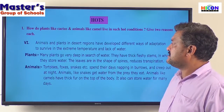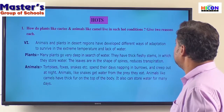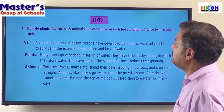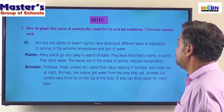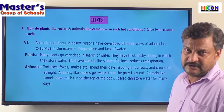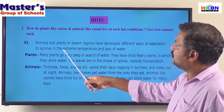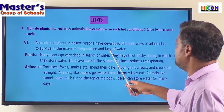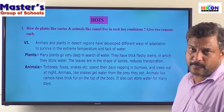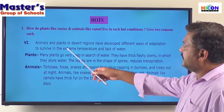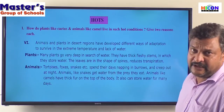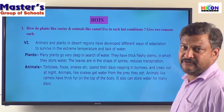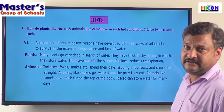Animals and plants in desert regions have developed different ways of adaptation to survive in extreme temperature and lack of water. These two are the two common features of deserts — extreme temperature and lack of water — and they are two major problems that we can find in desert regions.